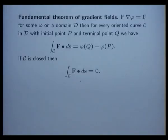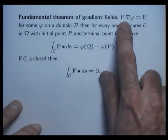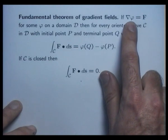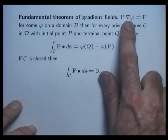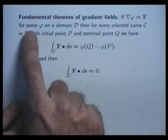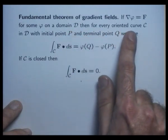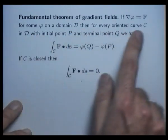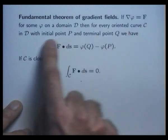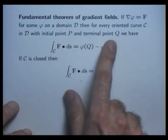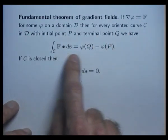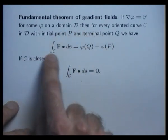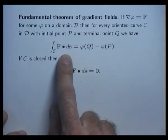All right, so let's read it. If there is a scalar field phi such that grad phi equals F on some domain, then for every oriented curve curly C in the domain with initial point P and terminal point Q, we have the following relationship for the line integral of F over C.